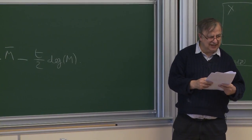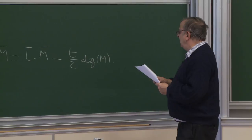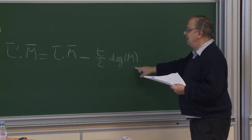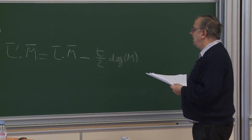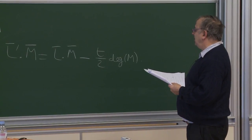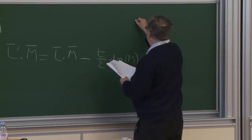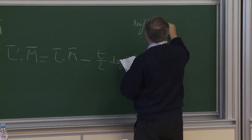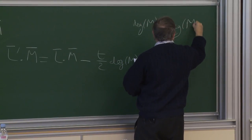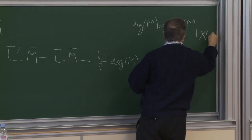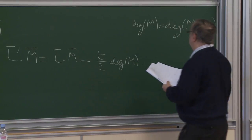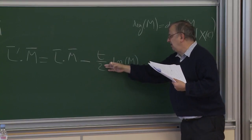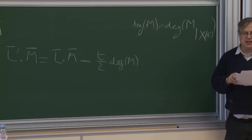The degree here is deg of M. So deg of M is the degree of the restriction of M to the complex curve X_C. This is an algebraic notion, but it comes in multiplied by t. Now we shall define this number.